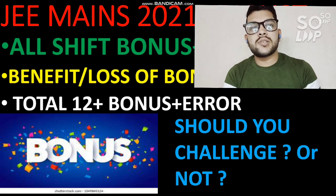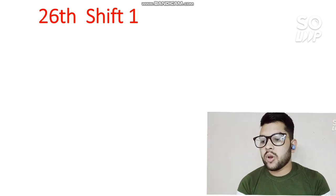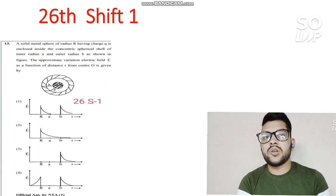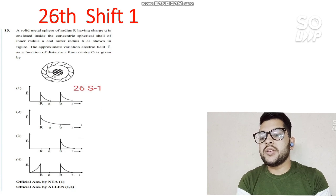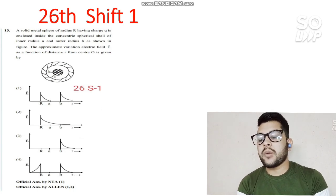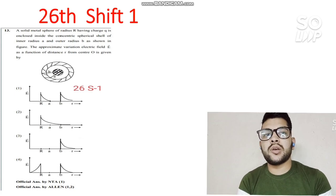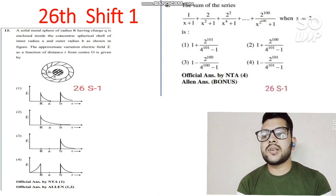Let's start. Here is the bonus and error for 26th August Shift 1 — a Physics question. The official answer by NTA is 1, and the official answer by LN is 1 and 2. So if you provided answer 1 or 2, you will get the marks. You can trust this information because it comes from LN, which is mostly accurate. You can add your marks to your expected marks.